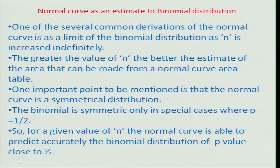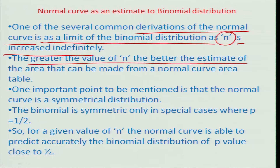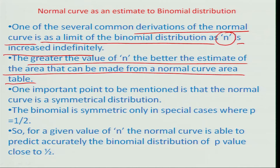We would like to see the derivation of the normal distribution curve as a limit to the binomial distribution — the same way we did with Poisson's — as n is increased indefinitely. The greater the value of n, the better the estimate of area that can be made from the normal curve area table. One very important point is that this distribution is a symmetrical distribution.